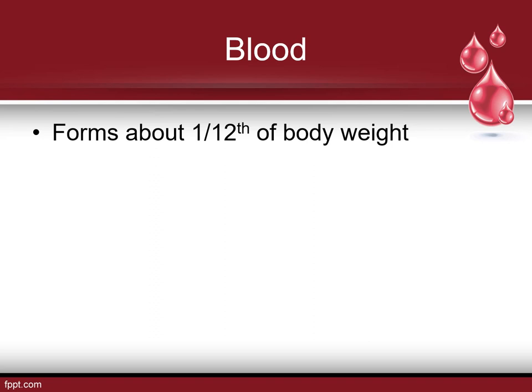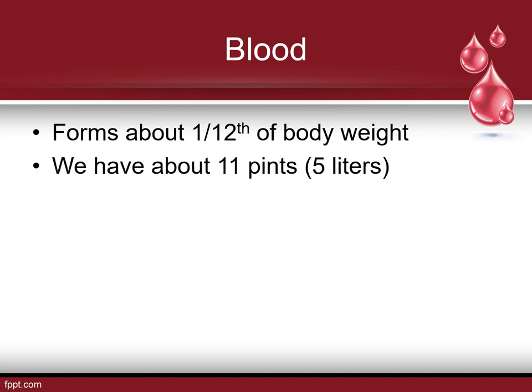Blood is a pretty significant part of our body — it's a twelfth of our body weight, and we've got about 11 pints, or 5 liters. We obviously can't lose very much of it before we start seeing different organ systems or tissues failing, because we're not able to transport hormones, oxygen, or regulate our body temperature.